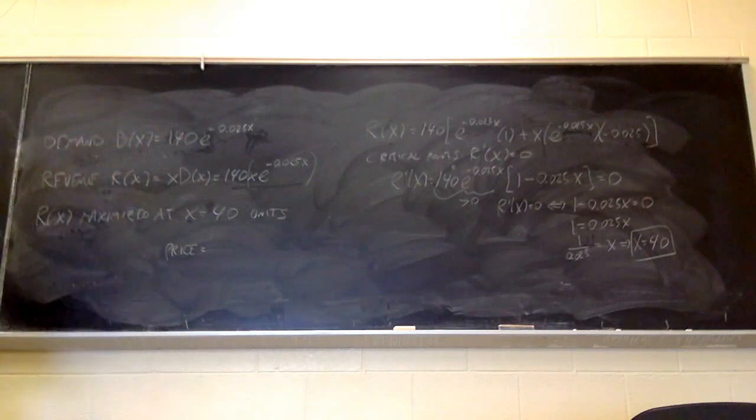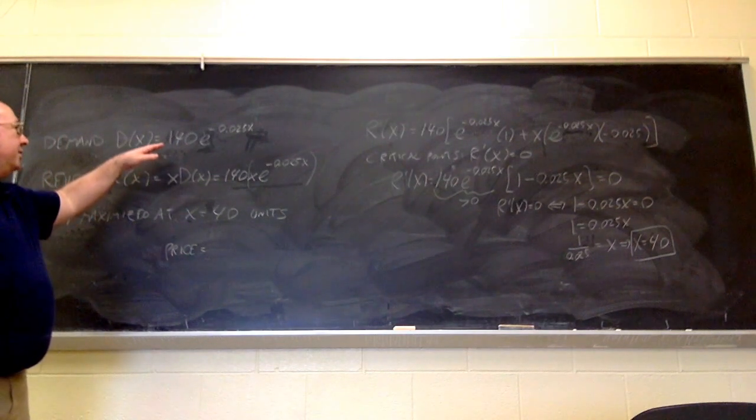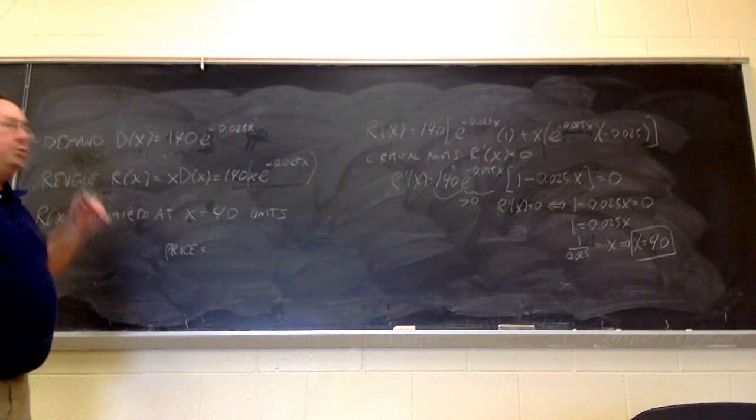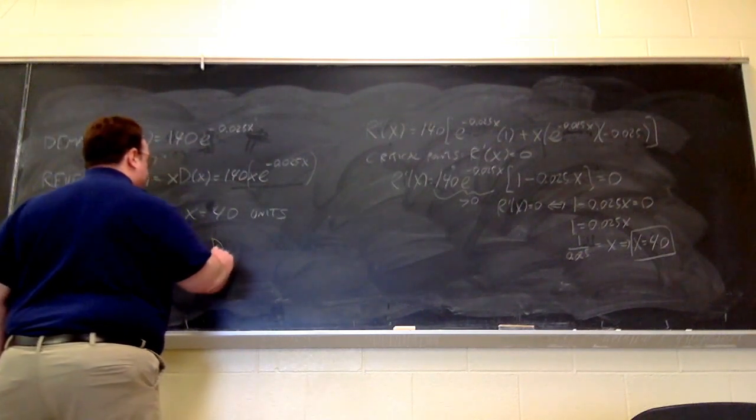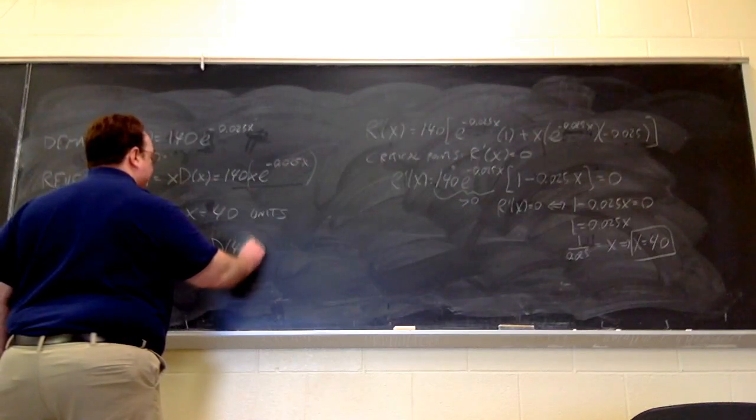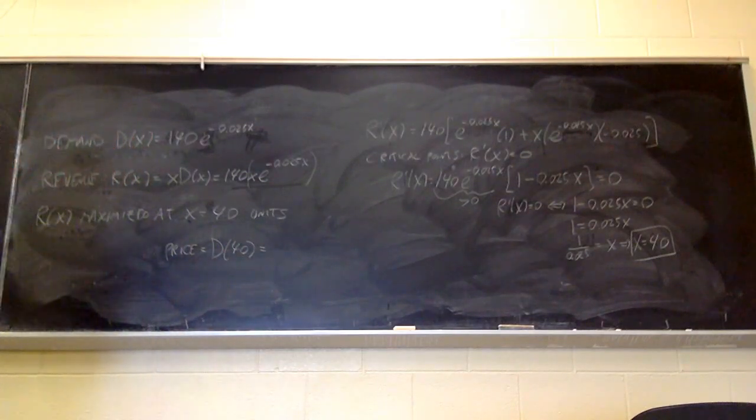So, now that we've established that it's best to sell 40 units to maximize revenue, we still need to assess the demand at that number of units to determine what price the item should be sold at. So, the price is going to be the demand function d evaluated at x is equal to 40.